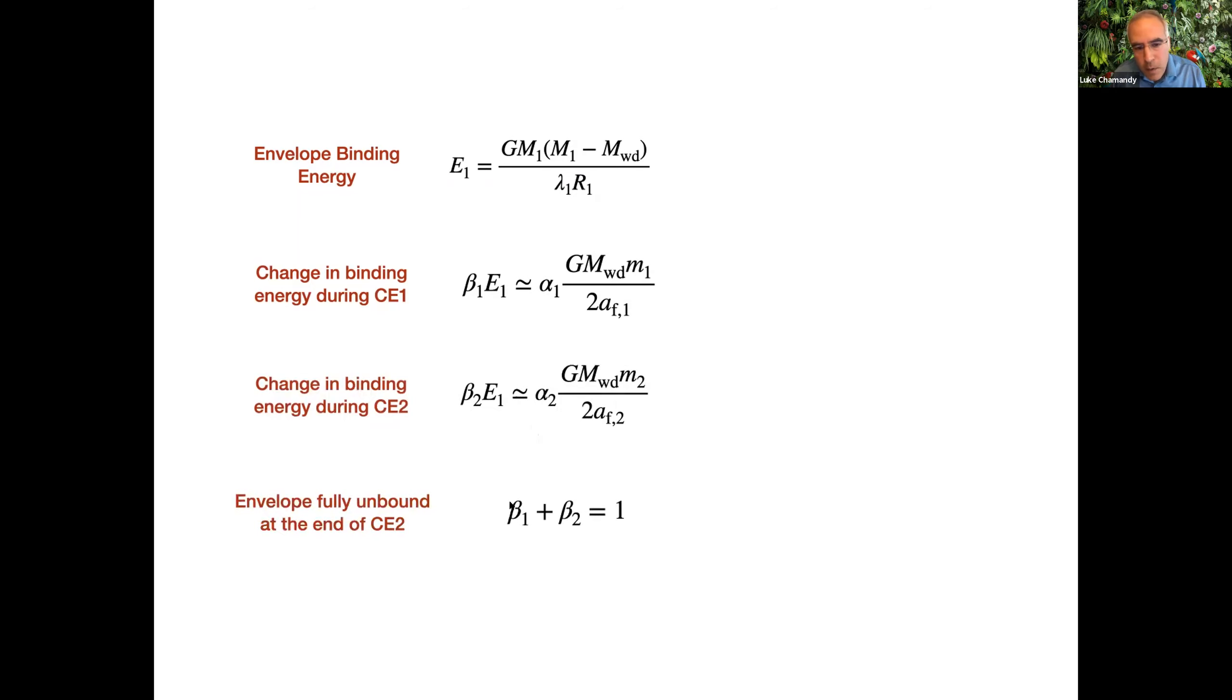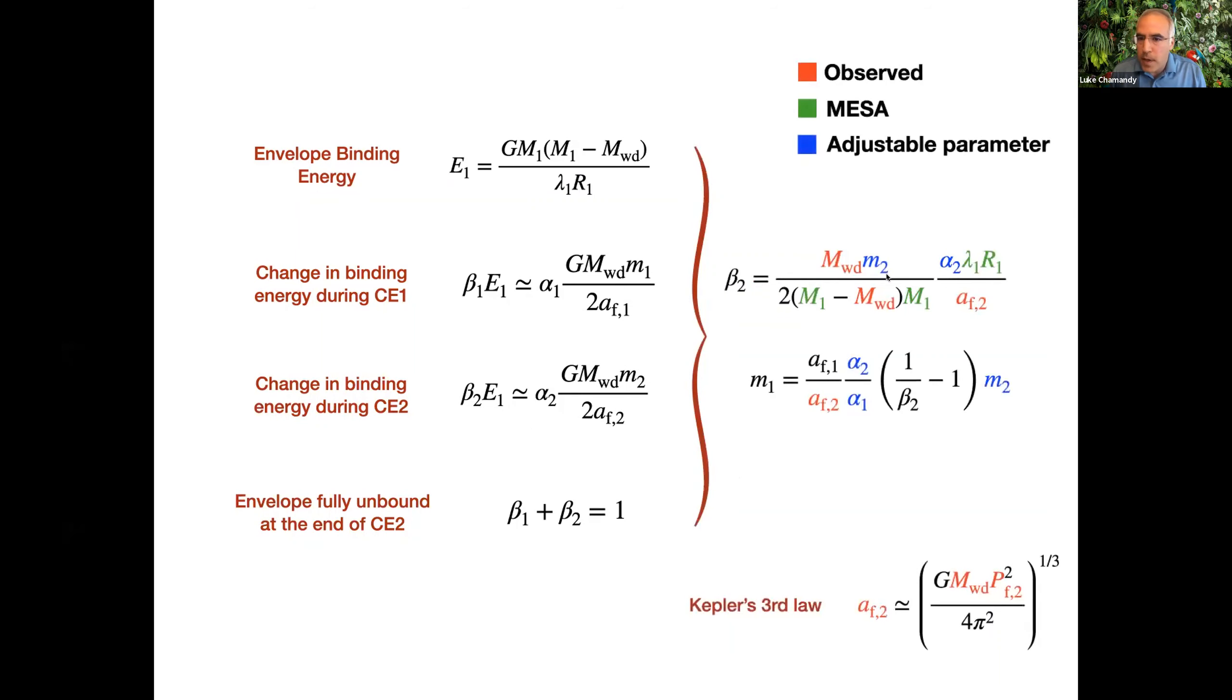The second common envelope then happens, and it puts in some fraction beta two of the initial binding energy with some efficiency alpha two. Since the envelope has to be ejected, we say beta one plus beta two equals one. Now you can combine these, you get this expression for beta two in terms of some of these other parameters, and an expression for m one, the mass of the original planet that went in the first common envelope. I've colored it here so that the red shows you the observed quantities. These are constrained by observations. The green ones are parameters that can be constrained using MESA stellar evolution models. And the blue ones are still adjustable parameters.